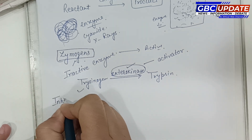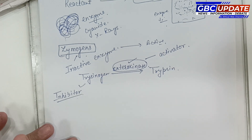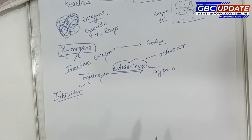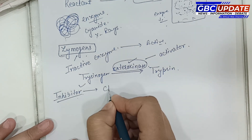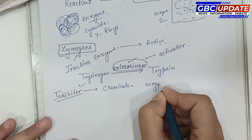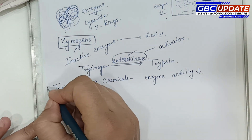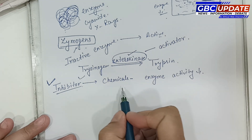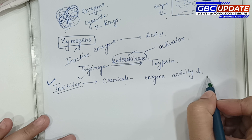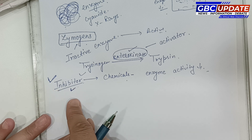The next topic is inhibitors. There are certain chemicals which reduce the enzymatic activity. These chemicals are called inhibitors. The process by which they reduce activity is called inhibition. This is a very important topic, especially for NEET.